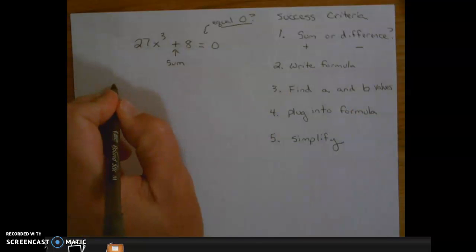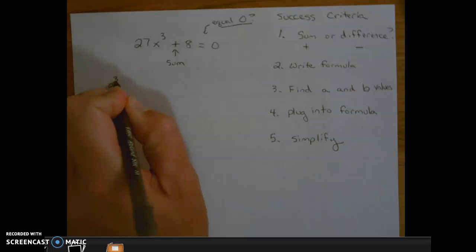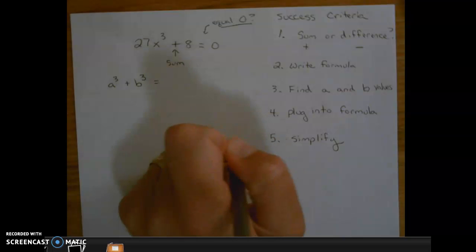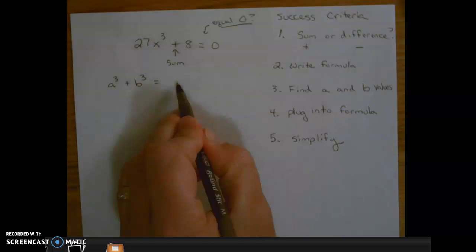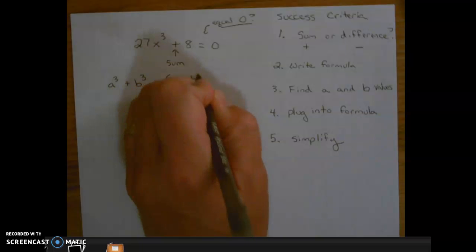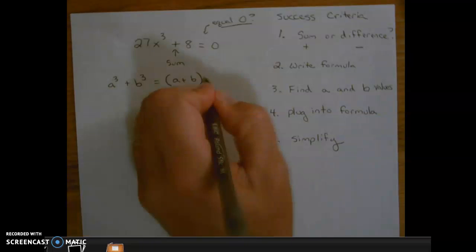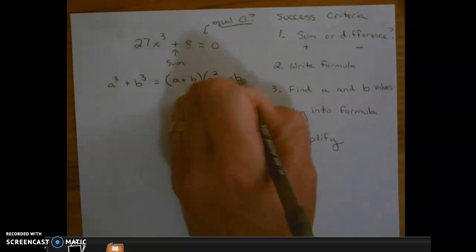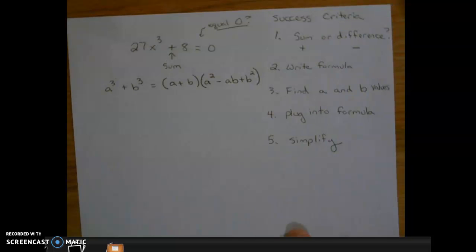So the formula is going to be a³ + b³, that's our original equation, equals, and these are going to be the factors. The first factor, a + b. The second factor, a² - ab + b².